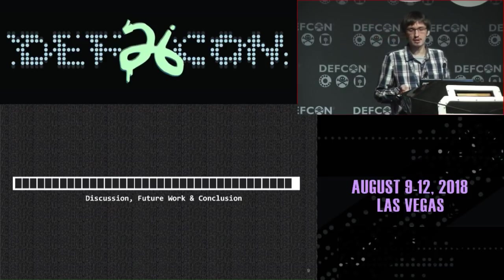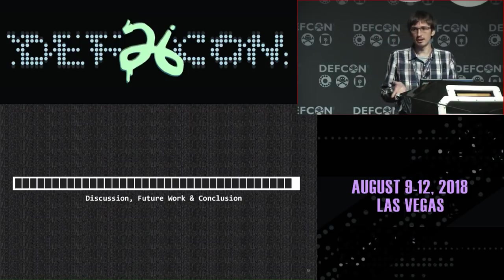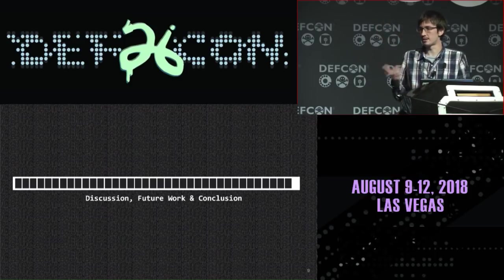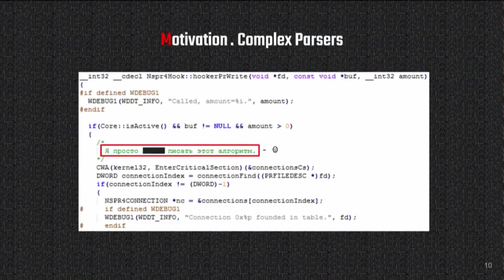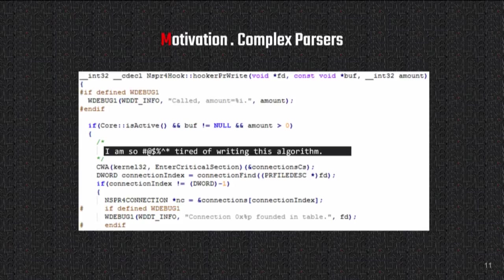Before actually starting to fuzz binaries, I decided to find and look over some leaked malware source code files just to understand that this idea makes sense. And guess what? Right in one of the first source code files I found a comment in Russian, which I was really laughing at for a couple of minutes. It looks like this idea makes sense and I'm going to find some bugs in this sample — and probably others. By the way, it's Carberp.